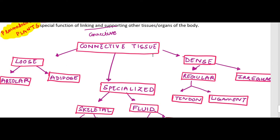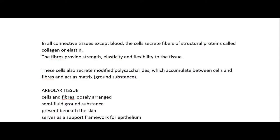Any tissue is composed of cells, and cells of connective tissue secrete two things: the matrix and the fibers. Fibers include collagen fibers and elastin fibers — these are structural proteins. In all connective tissue except blood, cells secrete fibers of structural proteins called collagen or elastin. In blood, the cells that secrete fibers are absent — this is very important to remember.